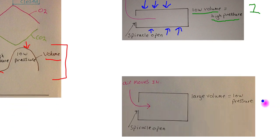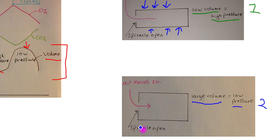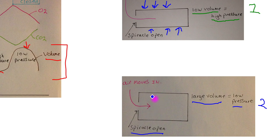In diagram number two, the exact opposite is happening. There's a large volume and hence low pressure, the spiracles are open, and this allows air to move into the tracheal system. Air can be sucked in through the open spiracle. The insect relaxes its abdominal muscles, the abdomen expands, and that increases the volume within the tracheal system.